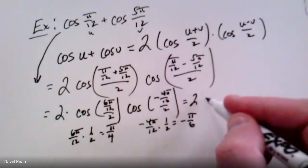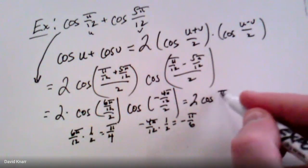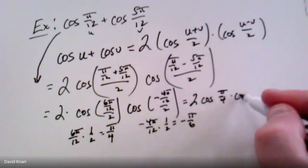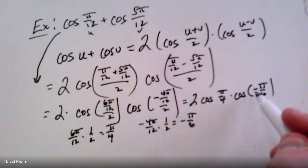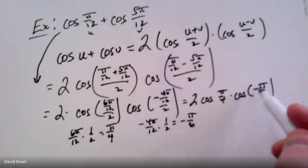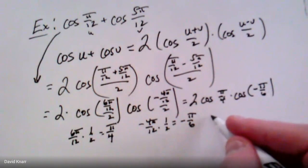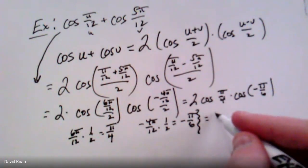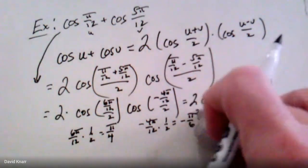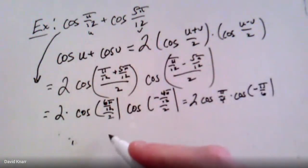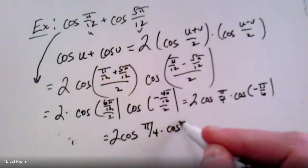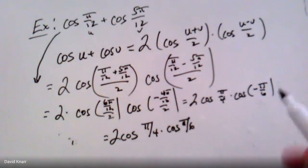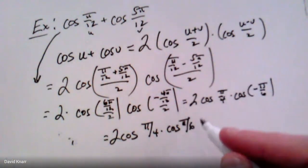Now we use the even and odd properties of trig functions. Cosine is an even function, so cos(−θ) = cos(θ) — the negative just gets dropped. This means we can rewrite the expression as 2·cos(π/4)·cos(π/6).